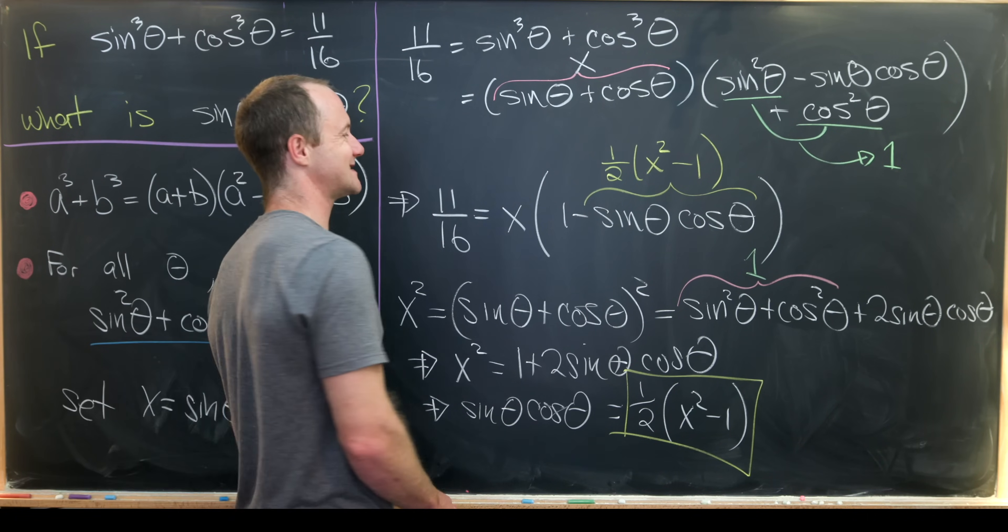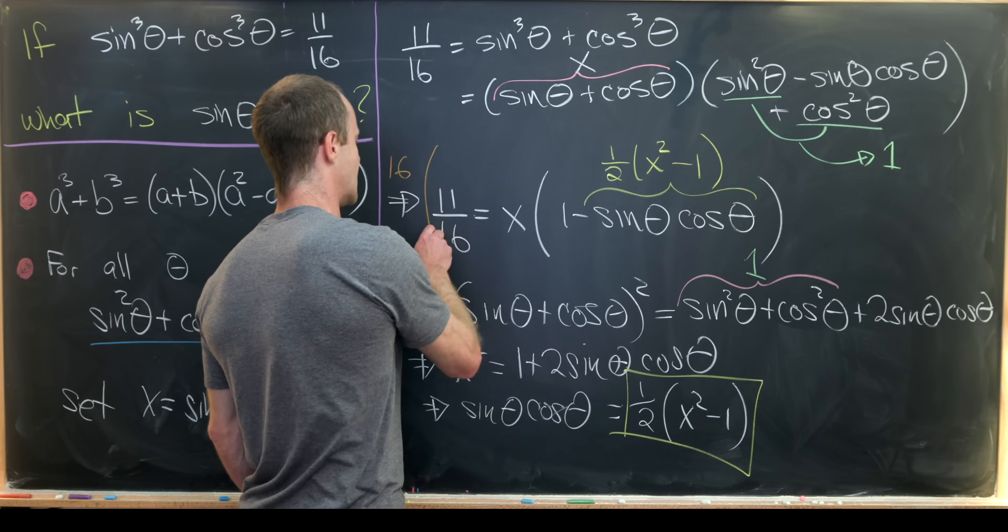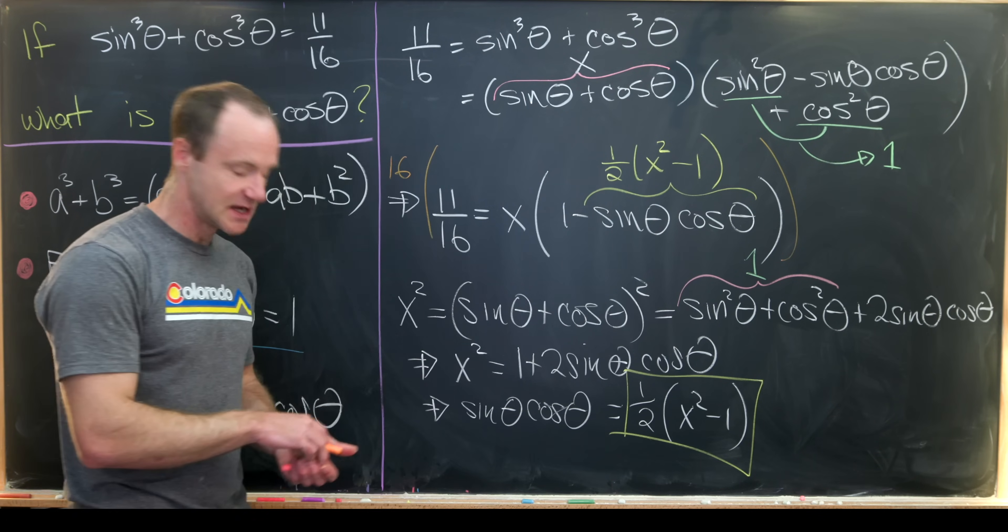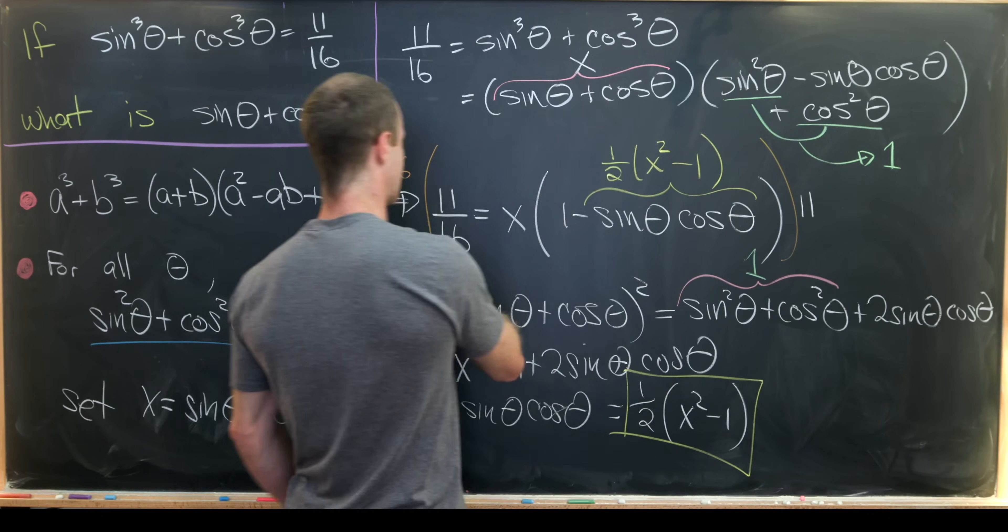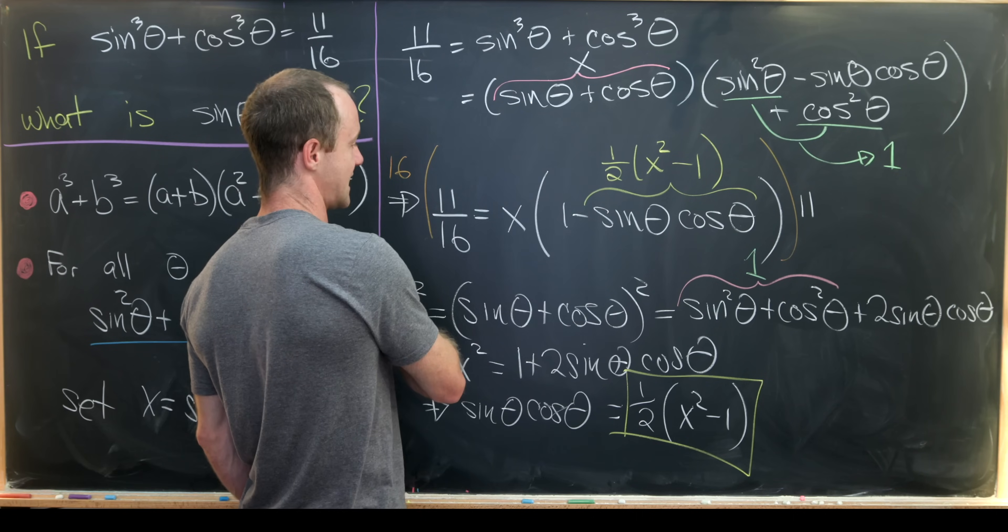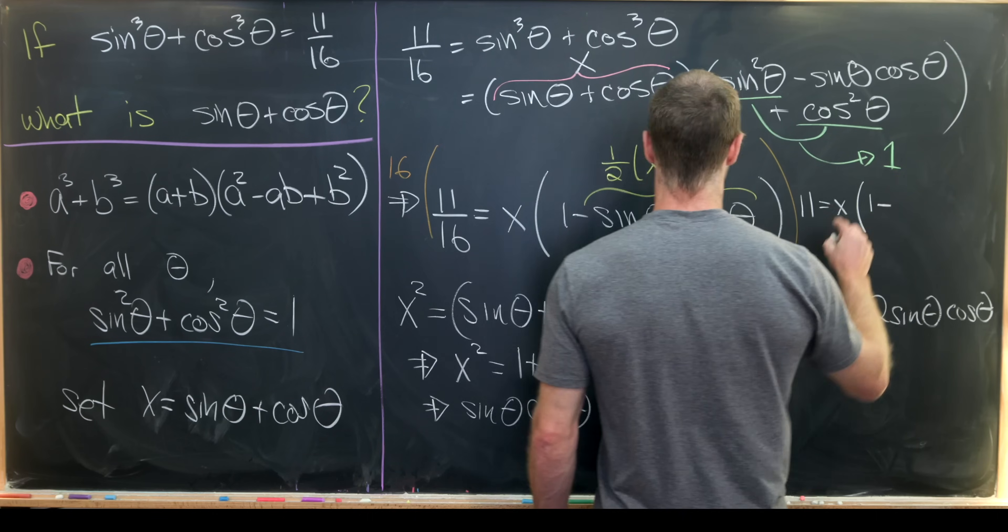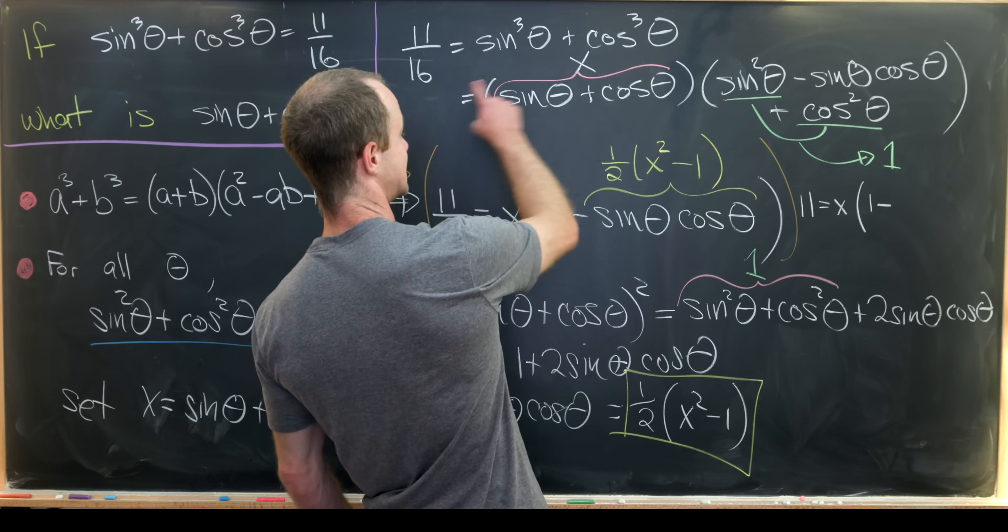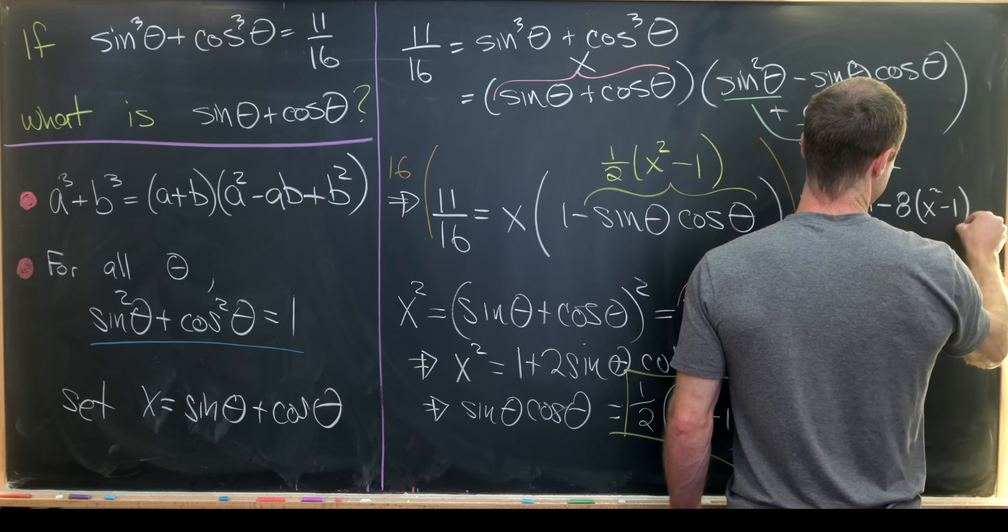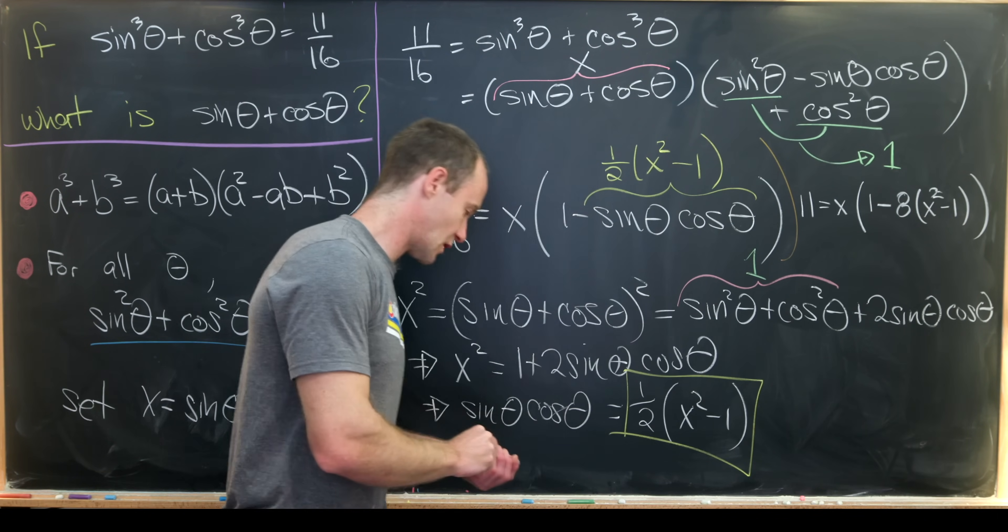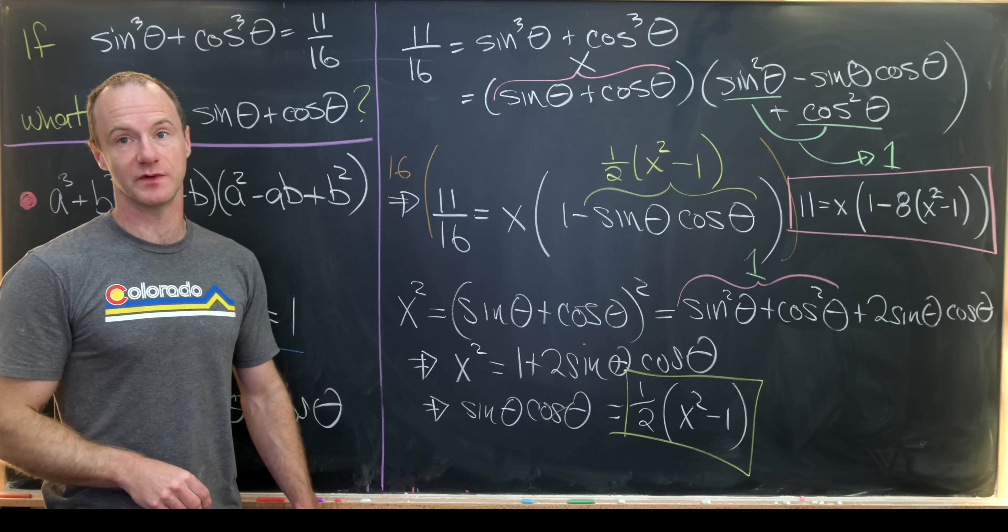Maybe before we move on to the next board, let's simplify this a little bit by multiplying this entire equation by 16, just to clear denominators. That's going to leave us with 11 on the left hand side. And then on the right hand side, we'll have x times, so we'll have one minus, and then we have 16 times half, so that's going to be eight times x squared minus one. So this is where we've left ourselves, and let's start the top of the next board with that cubic polynomial equation.